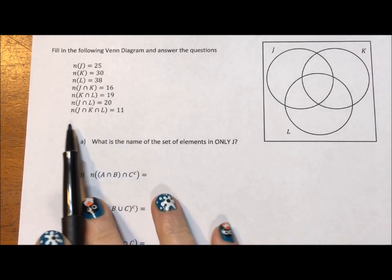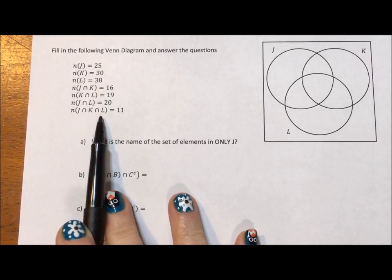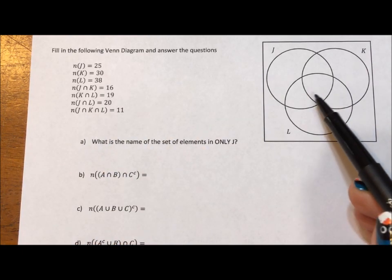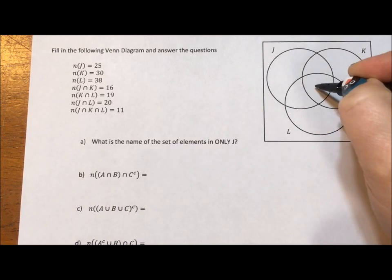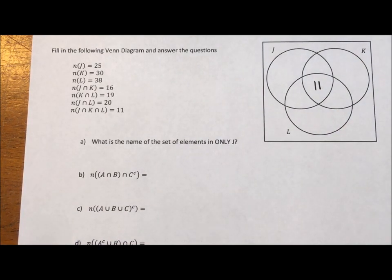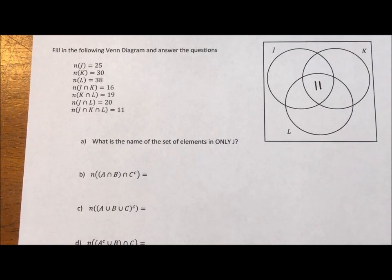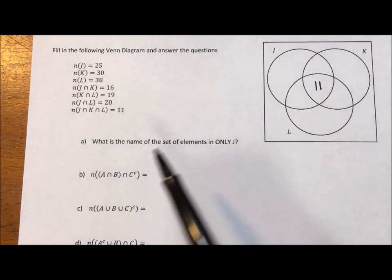So if we start at the bottom, the intersection of each of these is the one region that J, K, and L all share, which is the center of the storm, and it says that this has 11 elements in it. Okay, here's where things get tricky, and I don't mean hard tricky, but I just mean you have to think.